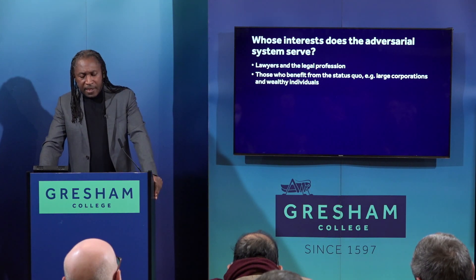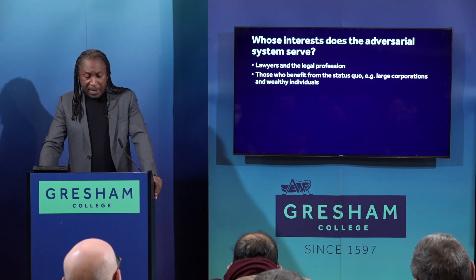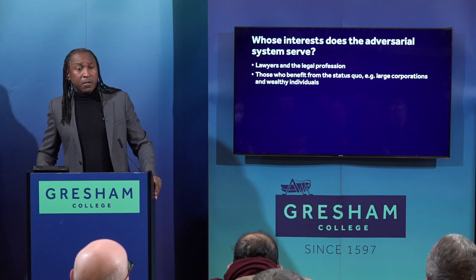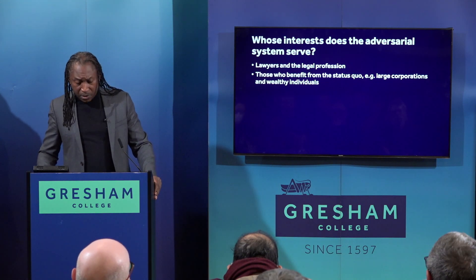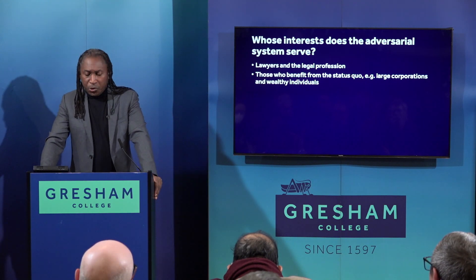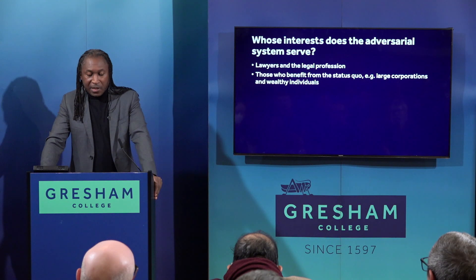In addition, the adversarial system can be seen as serving the interests of those who benefit from the status quo. In many cases, it is used to protect the interests of large corporations or wealthy individuals who may be able to use their resources to defend themselves against legal challenges. This results in situations where powerful interests are able to use the legal system to avoid accountability or to maintain their dominance over others.